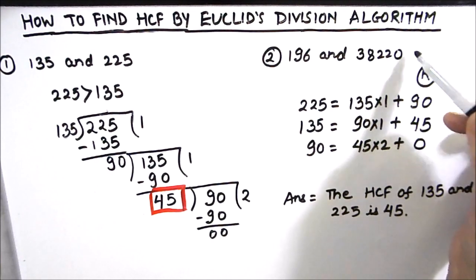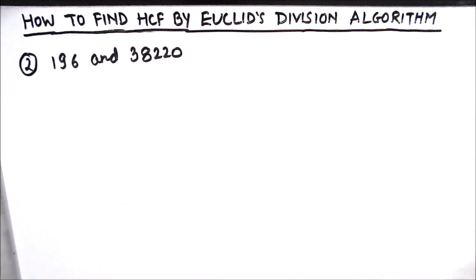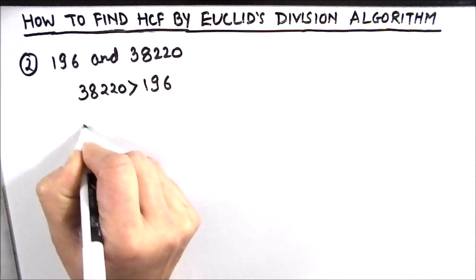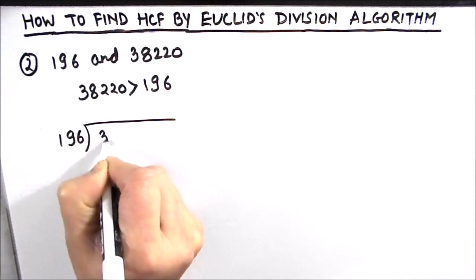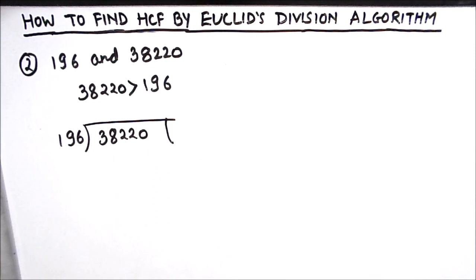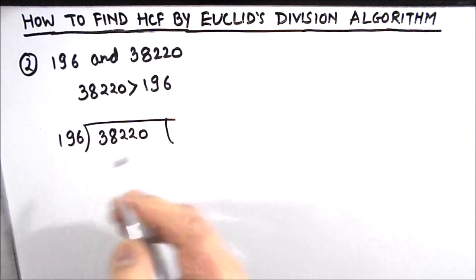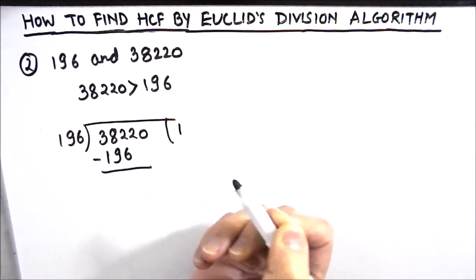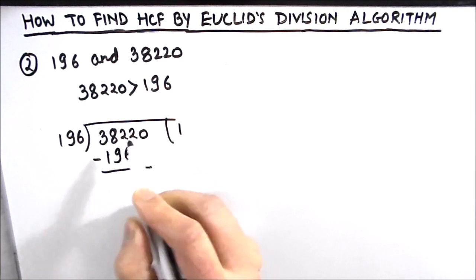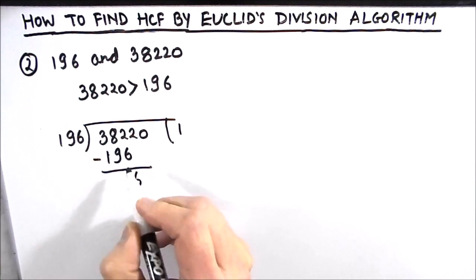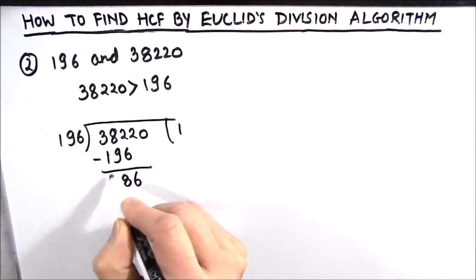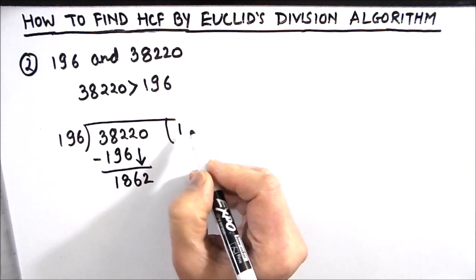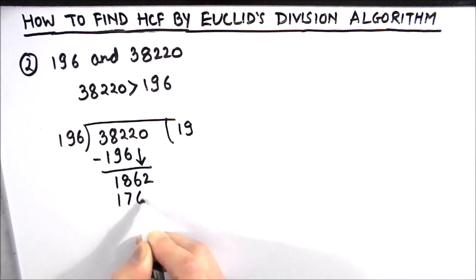Let's solve our second example. We check which number is bigger — 38,220 is bigger than 196. So we divide 38,220 by 196. 196 times 1 is 196. Subtracting: 12 minus 6 is 6, this becomes 17; 17 minus 9 is 8; 2 minus 1 is 1. We drop down the next digit 2. 196 times 9 is 1764.